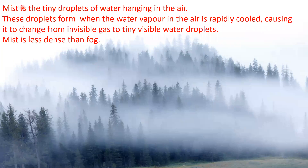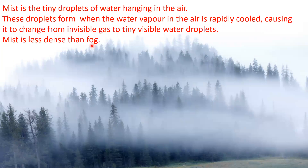Mist is tiny droplets of water hanging in the air. These droplets form when water vapor in the air is rapidly cooled, causing it to change from an invisible gas to tiny visible water droplets. Mist is less dense than fog. Fog and mist are similar, but mist is less dense whereas fog is denser.